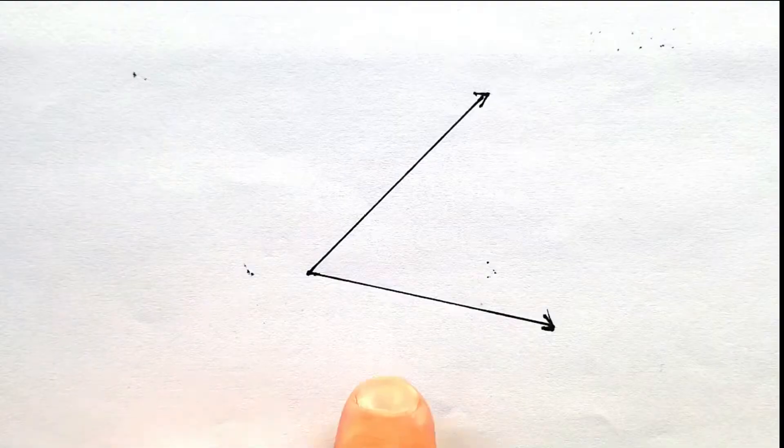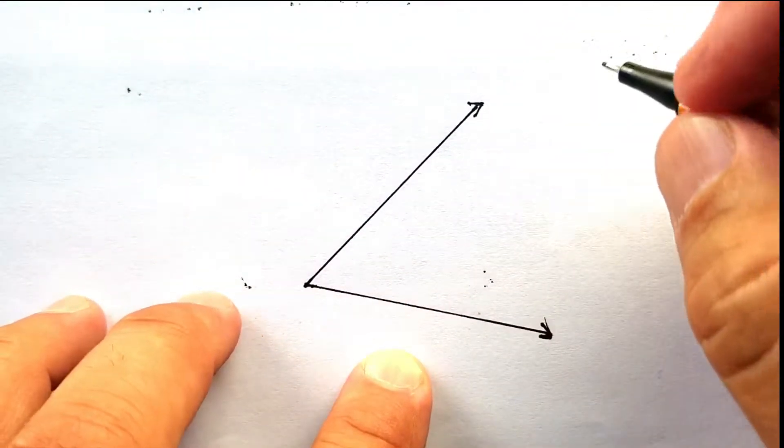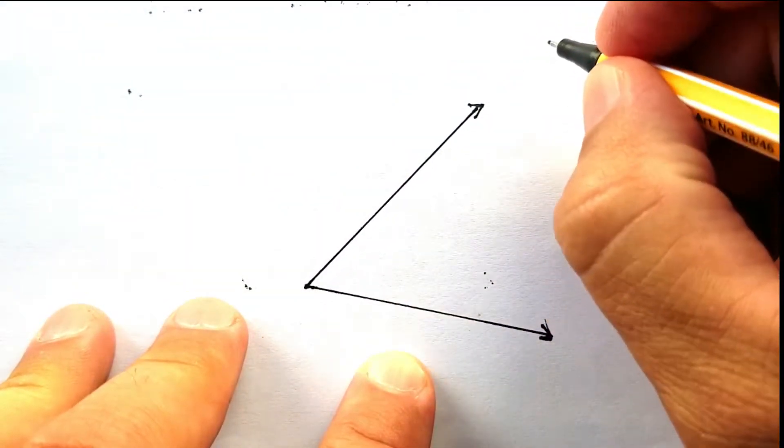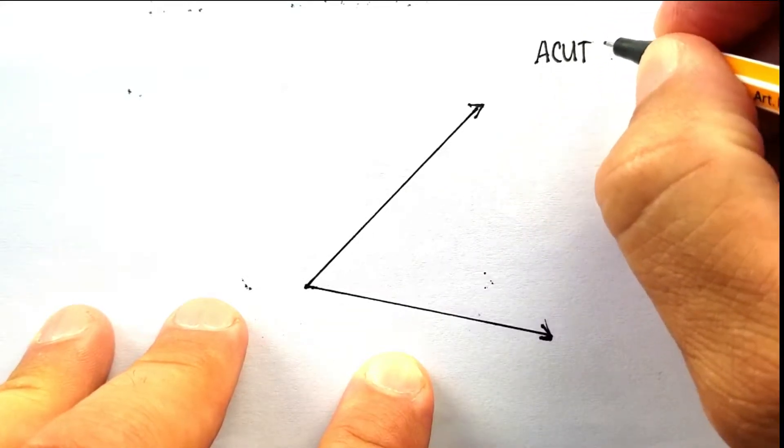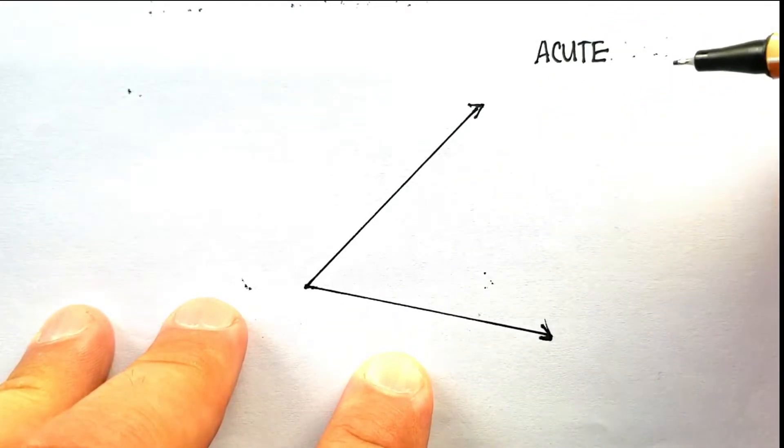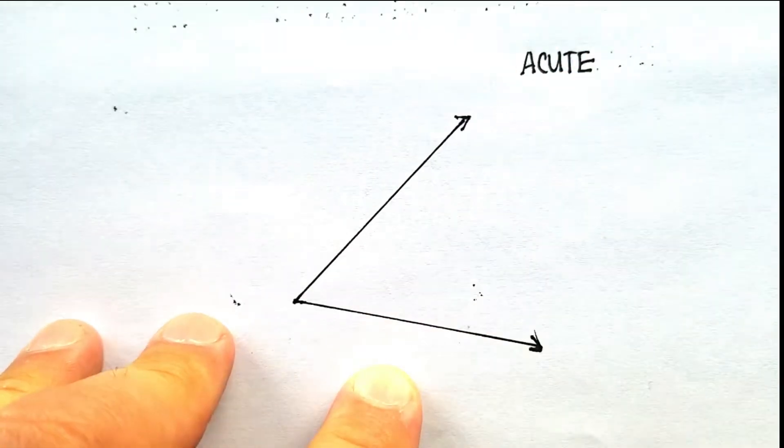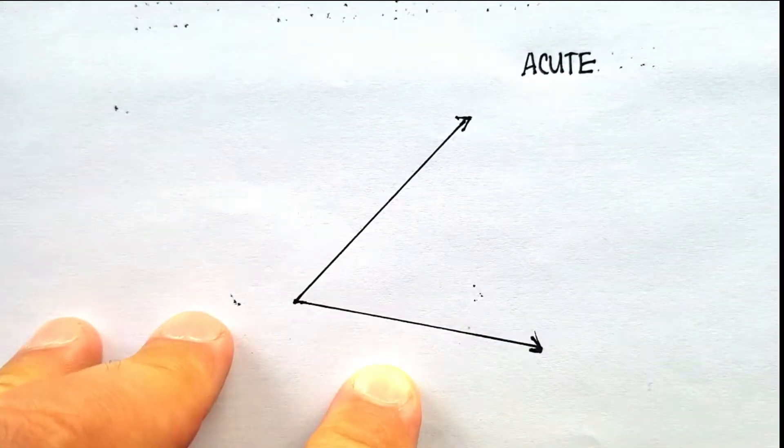So, remember, we're going to try to identify what kind of angle we have first. And at this particular instance, we have what's called an acute angle. Remember, acute angles have less than 90 degrees. But the process is very, very similar.